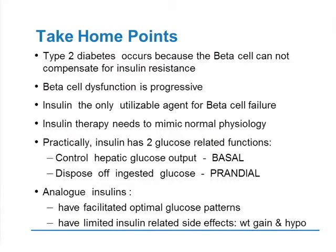The take-home points: type 2 diabetes occurs because the beta cell cannot compensate for insulin resistance. Beta cell dysfunction is progressive. Insulin then becomes the only utilizable agent when you don't have functioning beta cells — if your horses are dead, it doesn't matter how many whips you have. Insulin therapy needs to mimic normal physiology with two functions: control hepatic glucose output (basal) and dispose of an ingested glucose load (prandial). The analog insulins have facilitated optimal glucose patterns and have relatively limited — but not zero — side effects of weight gain and hypoglycemia. Thank you very much for your attention.